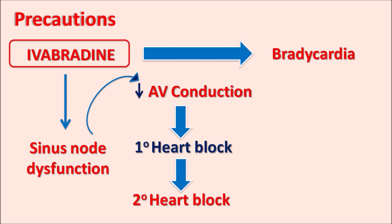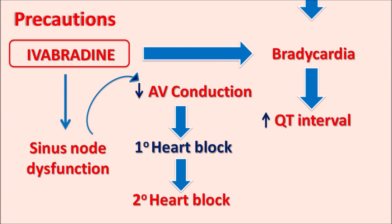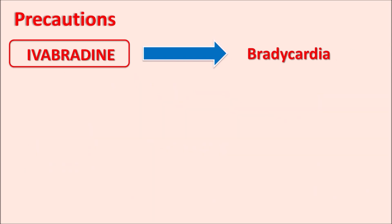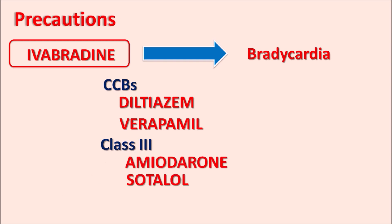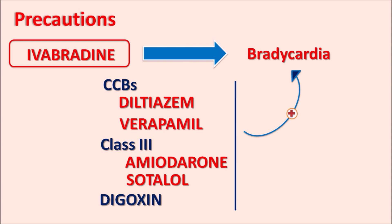Bradycardia produced by Ivabradine may result in fear of cardiac arrhythmias. It can increase the QT interval within the ECG, which may precipitate a fatal cardiac arrhythmia such as torsades de pointes. When Ivabradine is given with calcium channel blockers such as diltiazem or verapamil, class-3 antiarrhythmic drugs like amiodarone and sotalol, or cardiotonics like digoxin — all these drugs reduce heart rate and can further increase bradycardia. Diltiazem and verapamil can also increase levels of Ivabradine, further increasing risk.